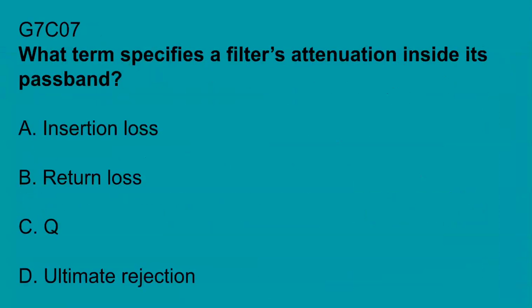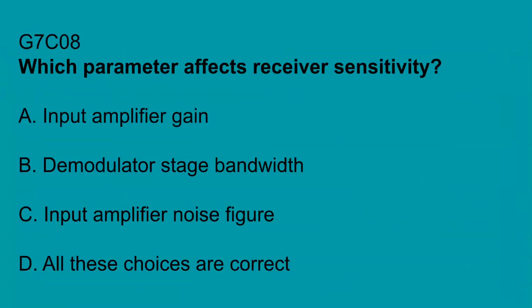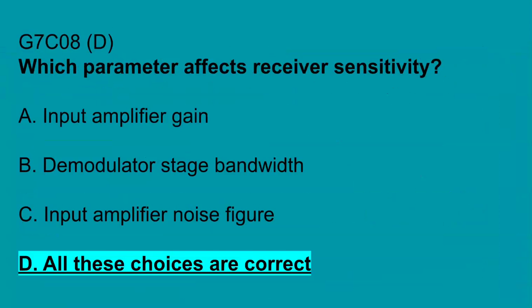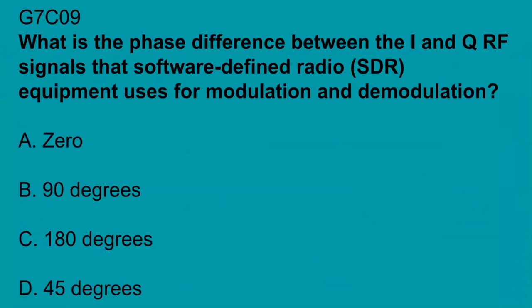G7C07, what term specifies a filter's attenuation inside its passband? Insertion loss. G7C08, which parameter affects receiver sensitivity? All these choices are correct, so input amplifier gain, demodulator stage bandwidth, and input amplifier noise figures. G7C09, what is the phase difference between the I and Q RF signals that software-defined radio equipment uses for modulation and demodulation? 90 degrees.